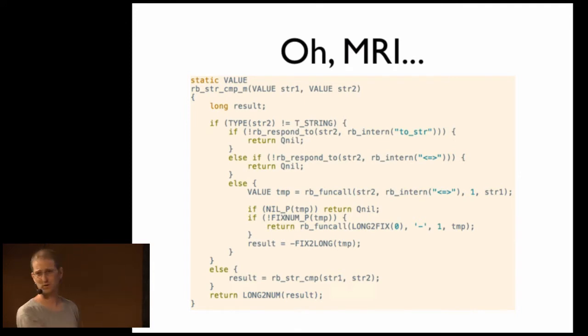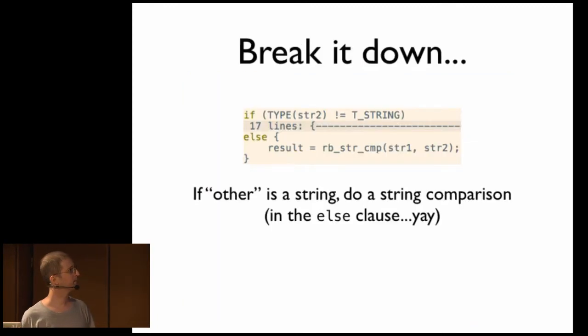Okay, this is quite a bit messier than times Spaceship, so we're going to take it. We're going to break it down a little bit. Okay, so first of all, I've hidden 17 lines of the outer if block so that we can see what this is actually doing. If other is a String, we're going to do a String comparison. Okay. In the else block. I don't know. Code style is, you know, a very subjective thing, but typically I would consider the common cases something you should put in the if block, not the else, but whatever. Okay, so what's in those 17 lines that we've hidden?